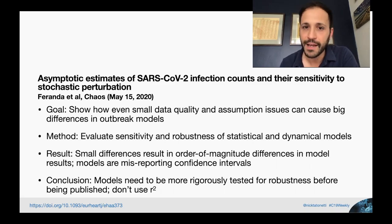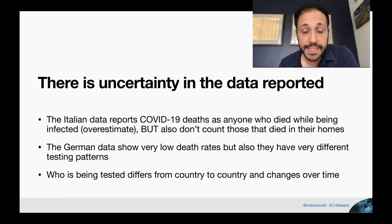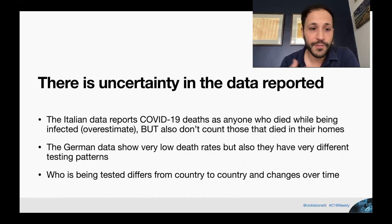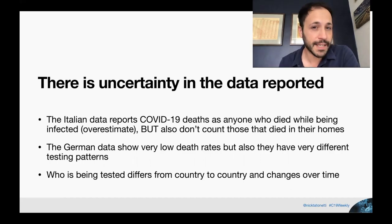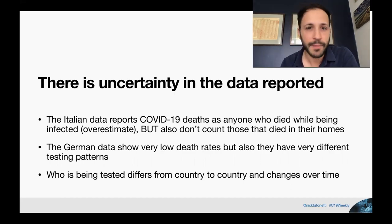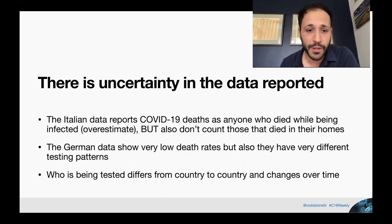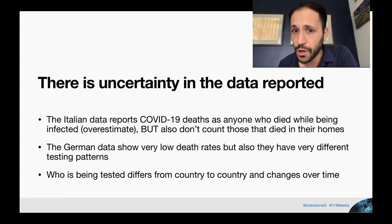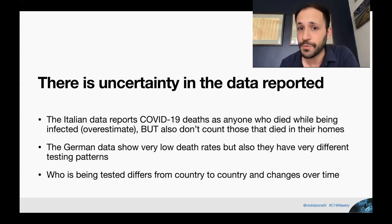Their conclusion is that models need to be more rigorously tested for robustness before being published, and to not use R-squared because it can give you a false sense of security. R-squareds can look really good and yet the models are still very sensitive underneath the hood. There's uncertainty in the data reported — for example, the Italian data reports COVID-19 deaths as anyone who died while being infected, even if they didn't die because of the infection, but they don't count those who died in their homes, so they might be both over-counting and under-counting deaths attributed to COVID-19.